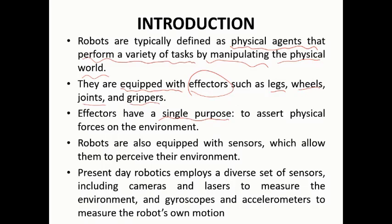Effectors have a single purpose: to assert physical forces on the environment. Movements such as rotation, moving forward or backward — all these are possible using legs, wheels, and other components. Effectors are used to move something within the environment, which requires physical force to accomplish that task.